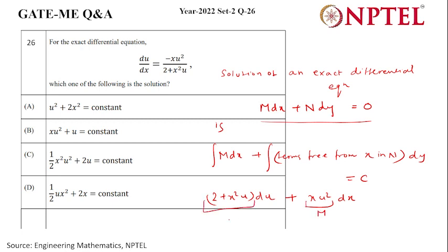So now our solution will be integration of xu² dx plus terms free from x which is 2. We will write it as 2 du equals C.